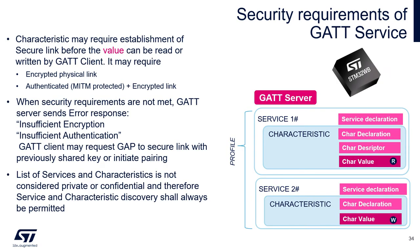Let's now look at how pairing is initiated. A GATT server typically consists of one or more BLE services, and each service consists of one or more characteristics. A characteristic can have properties — for example it can be read or written by the client. The characteristic value may require certain additional protections, such as requiring the link to be encrypted before the value can be read, or requiring an authenticated link, meaning the link is encrypted and the pairing method provided protection against man-in-the-middle attack. When security requirements are not met and the GATT client tries to read the characteristic, the server returns an error response — for example insufficient encryption or insufficient authentication. Based on this, the client initiates pairing, and once the link is secured it reads the characteristic value again with success.